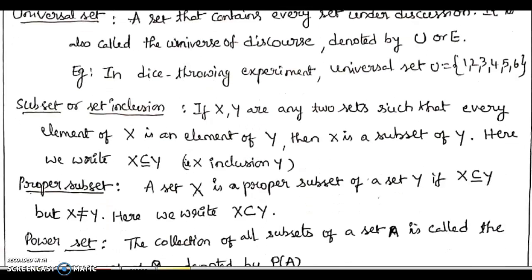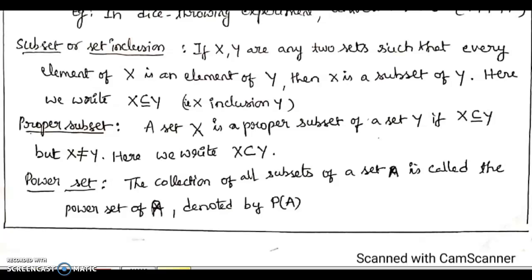Now, coming to the next basic definition: subset, also called set inclusion. Suppose there are two sets X and Y such that every element of X is also an element of Y. Then we say that X is a subset of Y. If X is a subset of Y such that X is not equal to Y, then we call X a proper subset of Y. When the condition that X is not equal to Y is not present, we simply call it set inclusion or a subset.